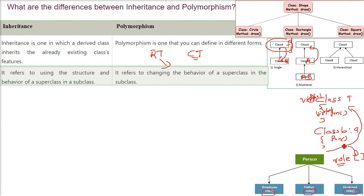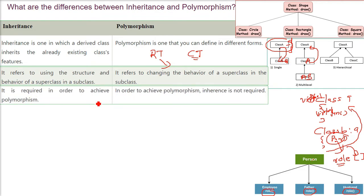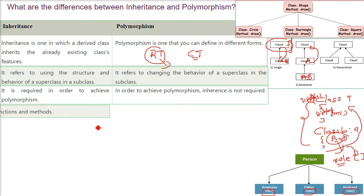Runtime polymorphism is achieved by method overriding — that is why we have the implementation of the FUN function in the derived class. Inheritance is required in order to achieve polymorphism, as polymorphism is only possible when there is an inheritance scenario. However, for compile-time polymorphism, inheritance is not required.